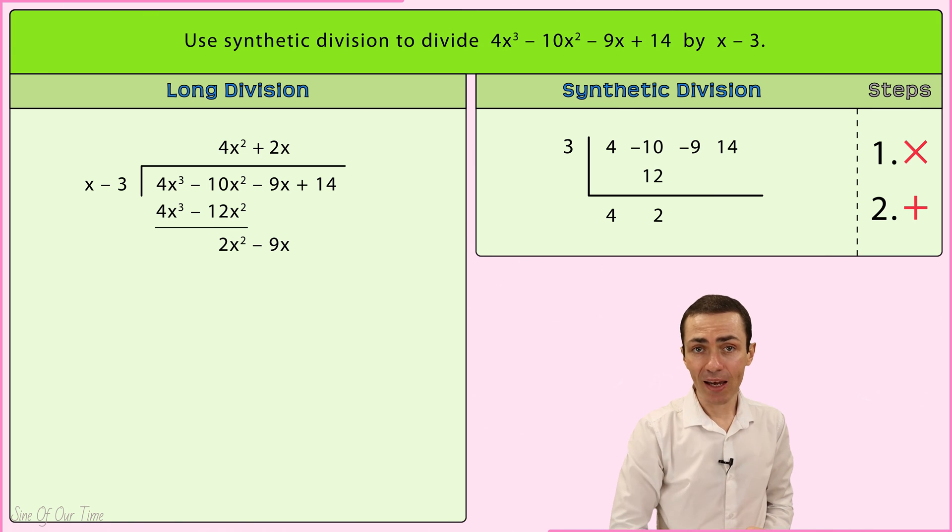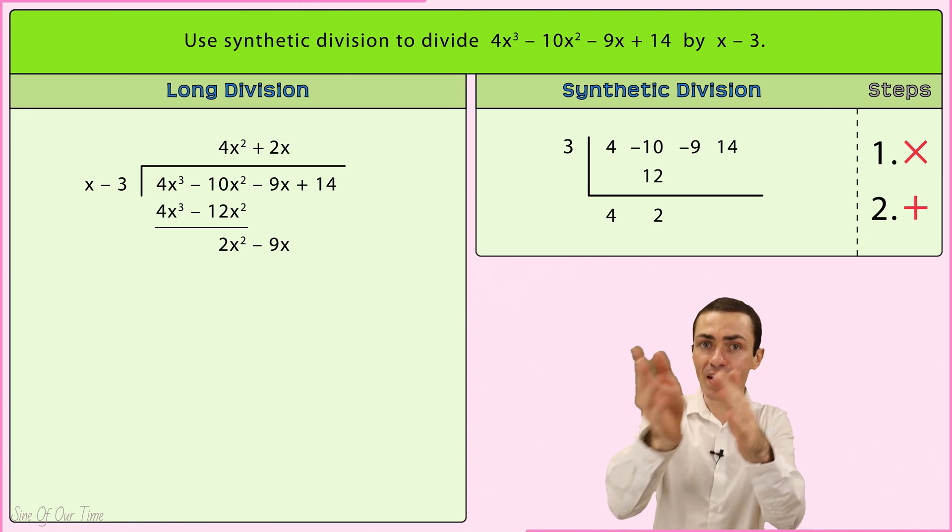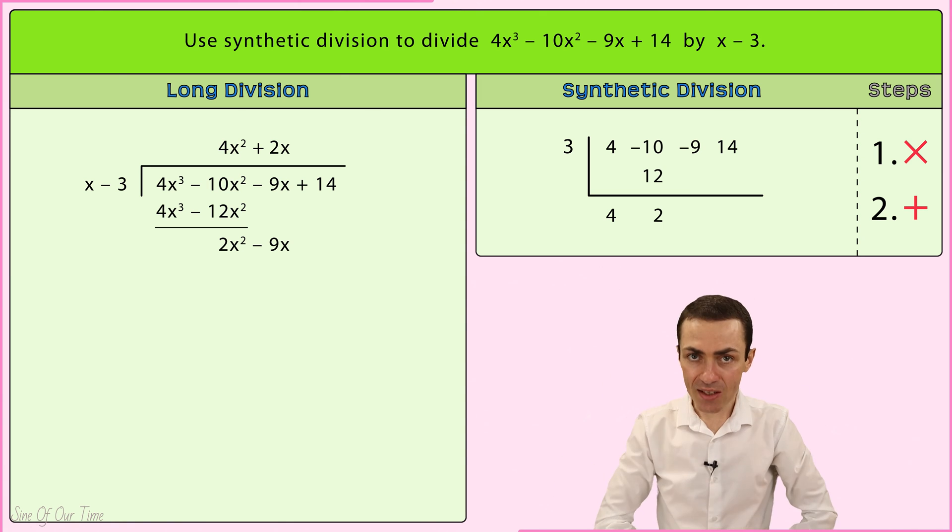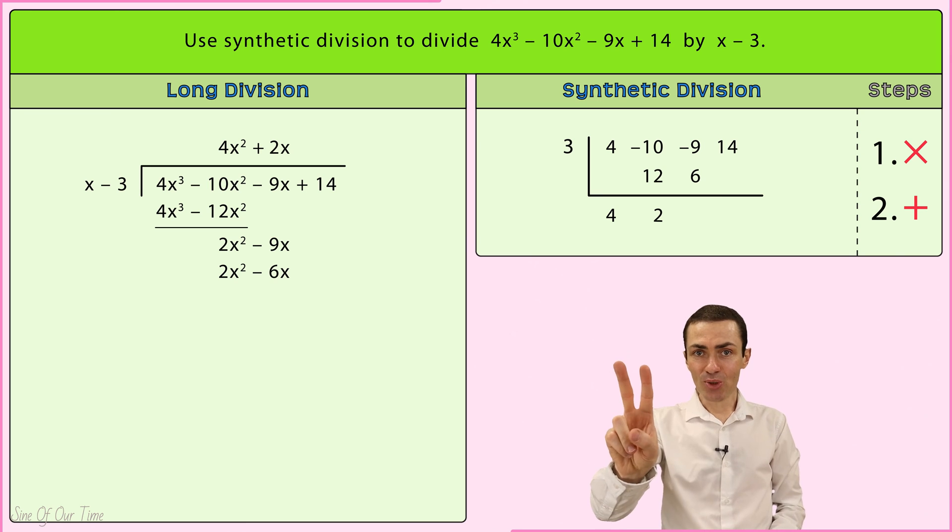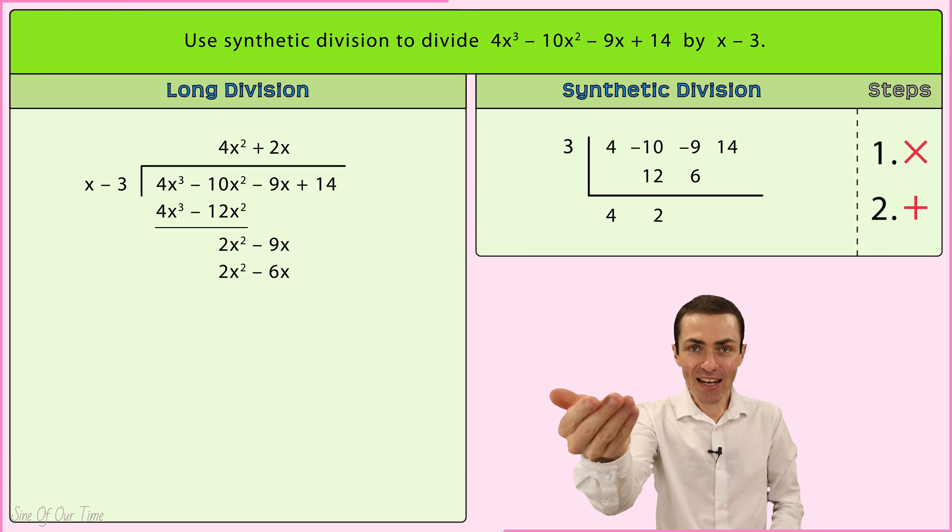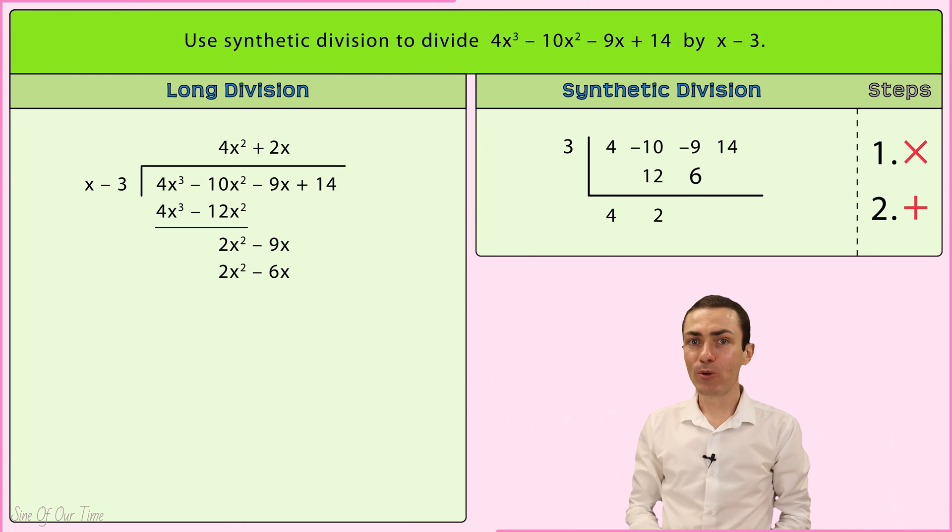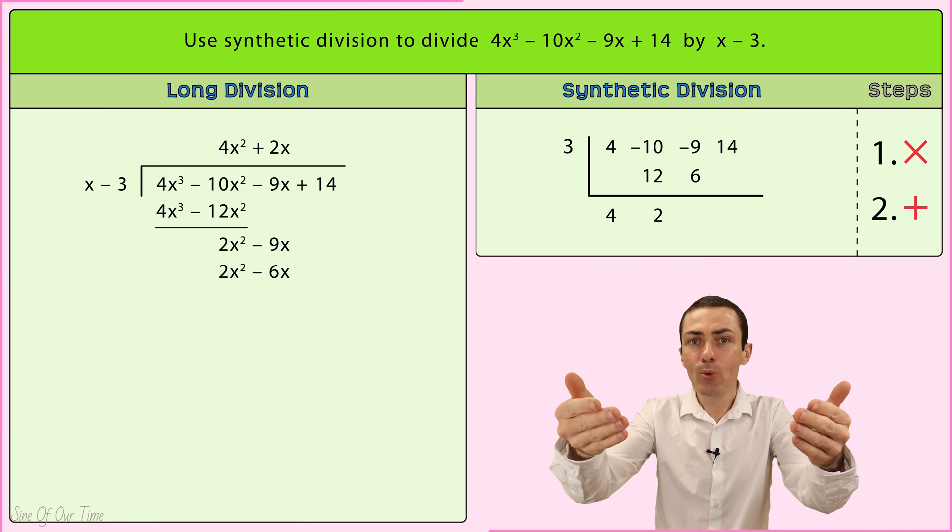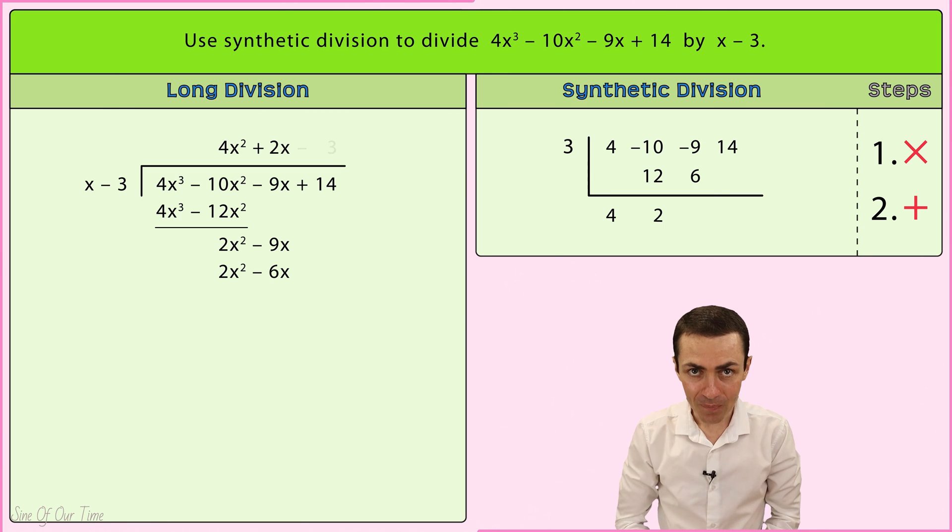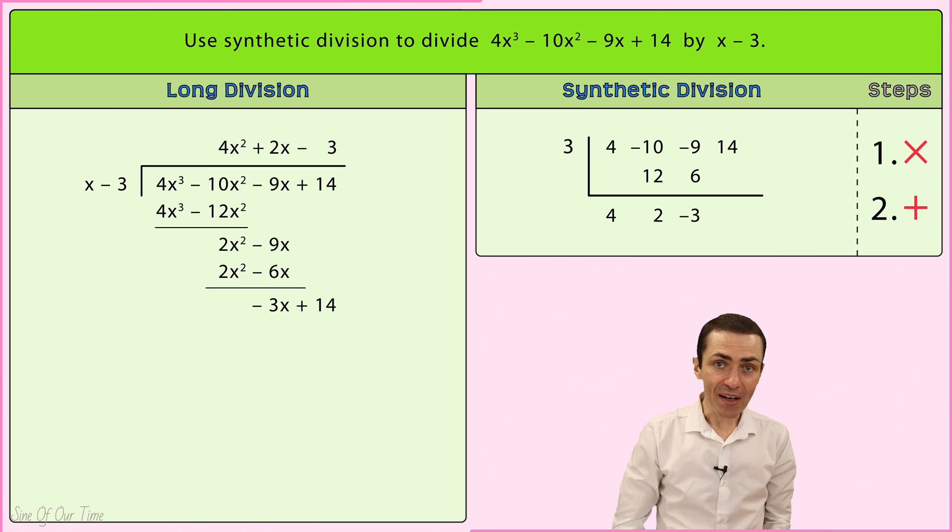Step 1, multiply. We take 3 multiplied by 2, which gives us 6, which we put in the next column beneath the negative 9. Step 2, add. We take that negative 9, add 6, which gives us negative 3, which we write below the synthetic division symbol. And then back to step 1, multiply.